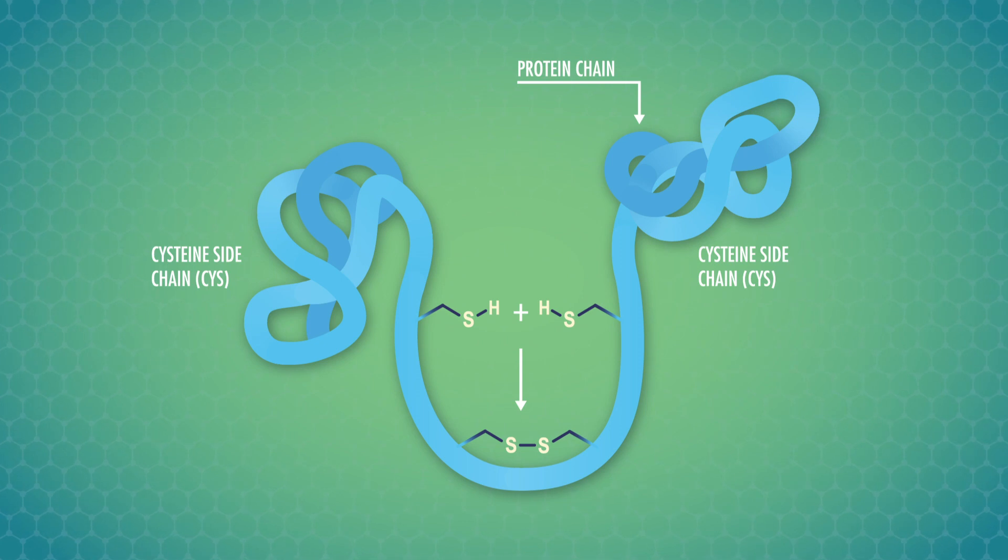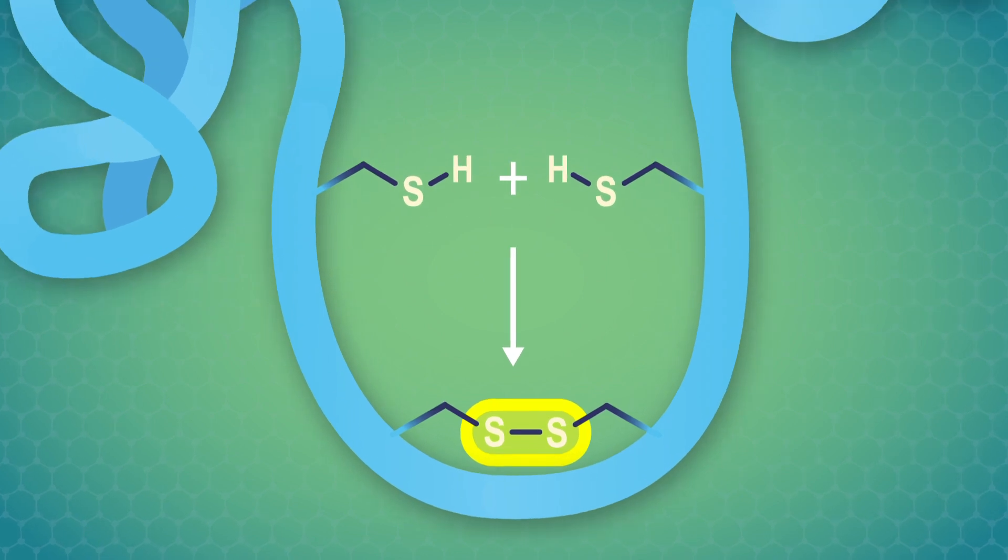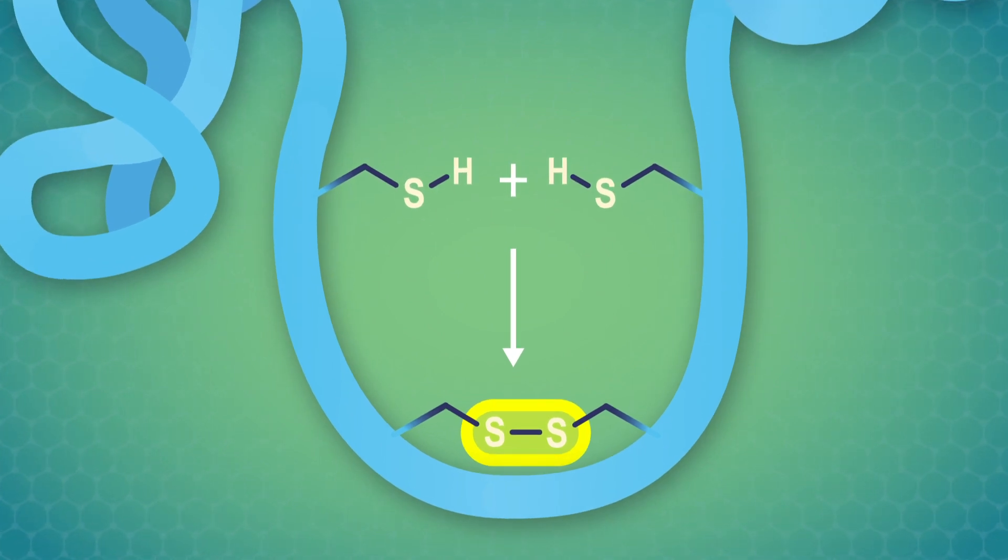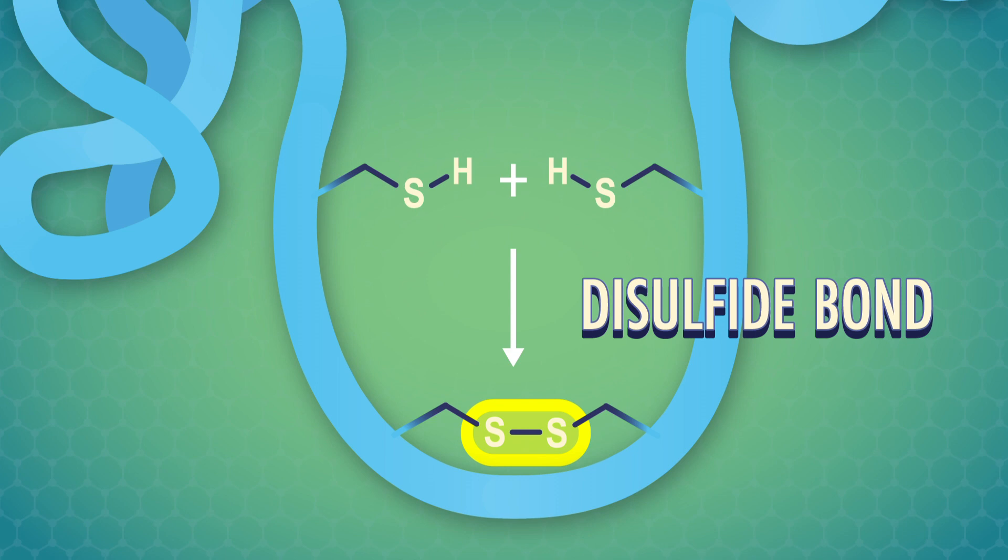The fourth main interaction that contributes to the tertiary structure is actually pretty strong. It's a covalent bond that can form between the sulfur atoms of two cysteine side chains, called a disulfide bond.